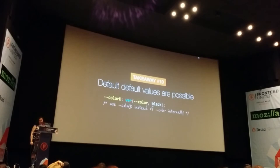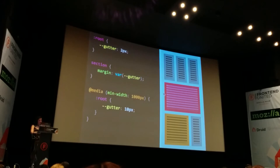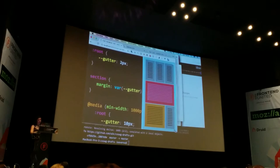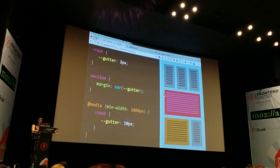Another good use of CSS variables is responsive design. Often you have to write multiple rules just to change one thing, whereas with variables you can define one declaration — for example, the gutter in a grid — and change it in one place. Let me go out of fullscreen mode to show how this works. The takeaway: CSS variables make responsive design easier.